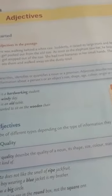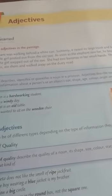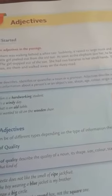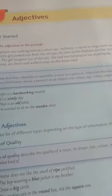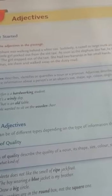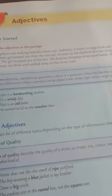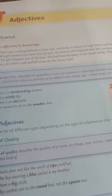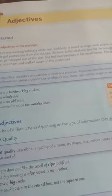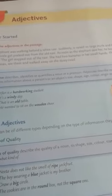Next, demonstrative adjective. Demonstrative adjective points out the specific person or thing being referred to. They are: this, that, these, and those. Example: She gave that book to her best friend.